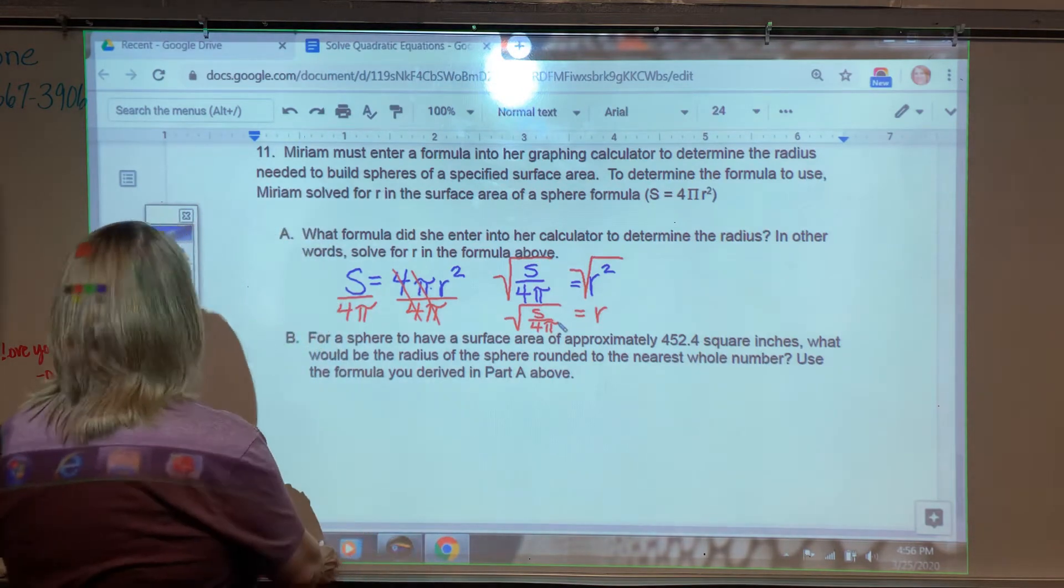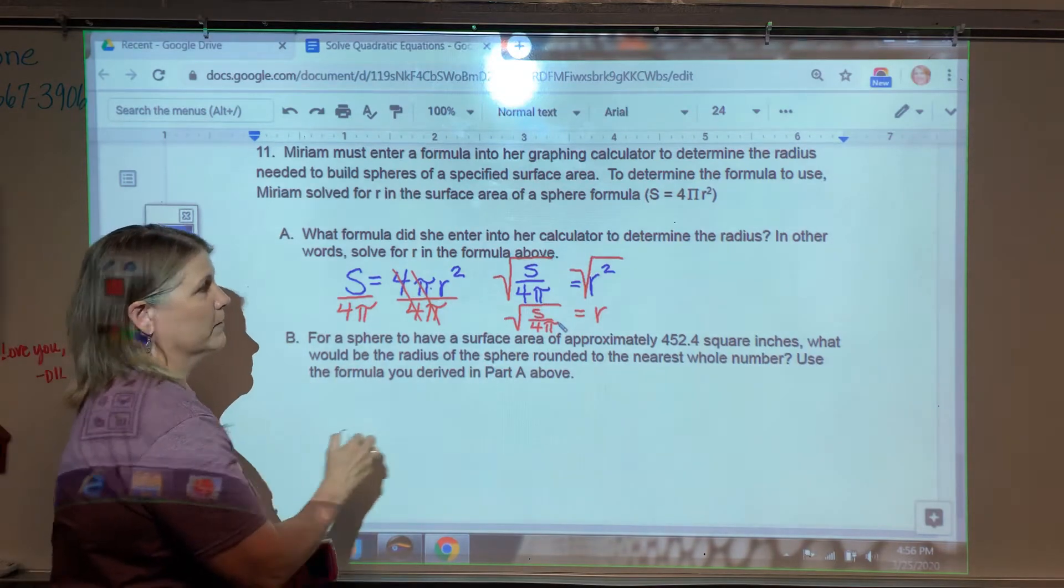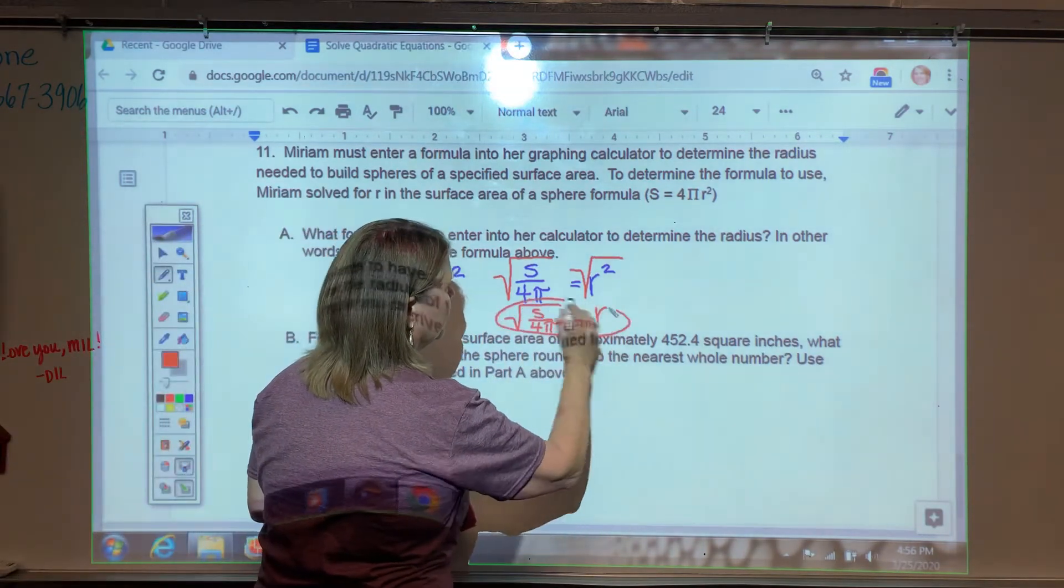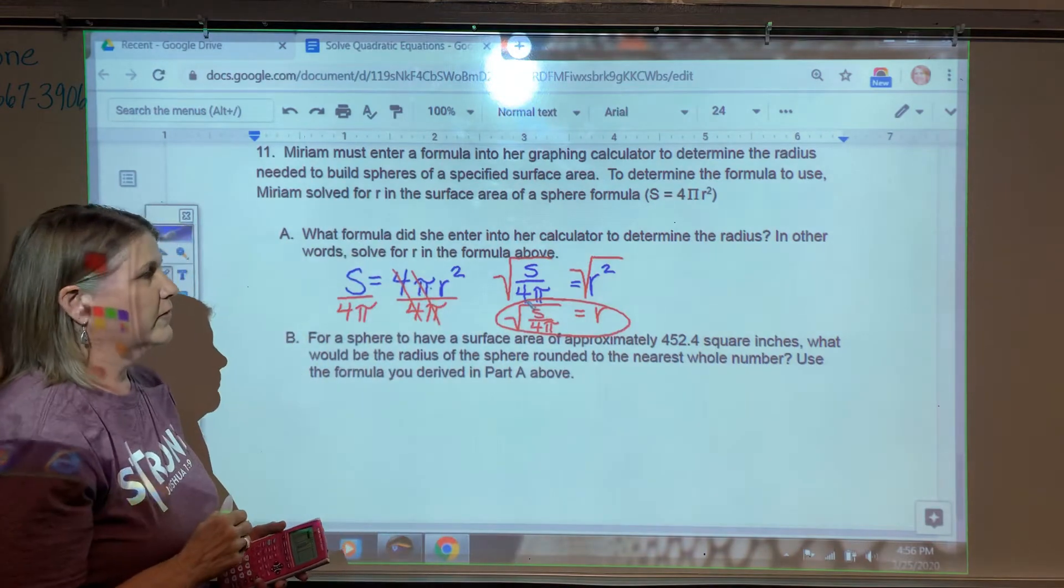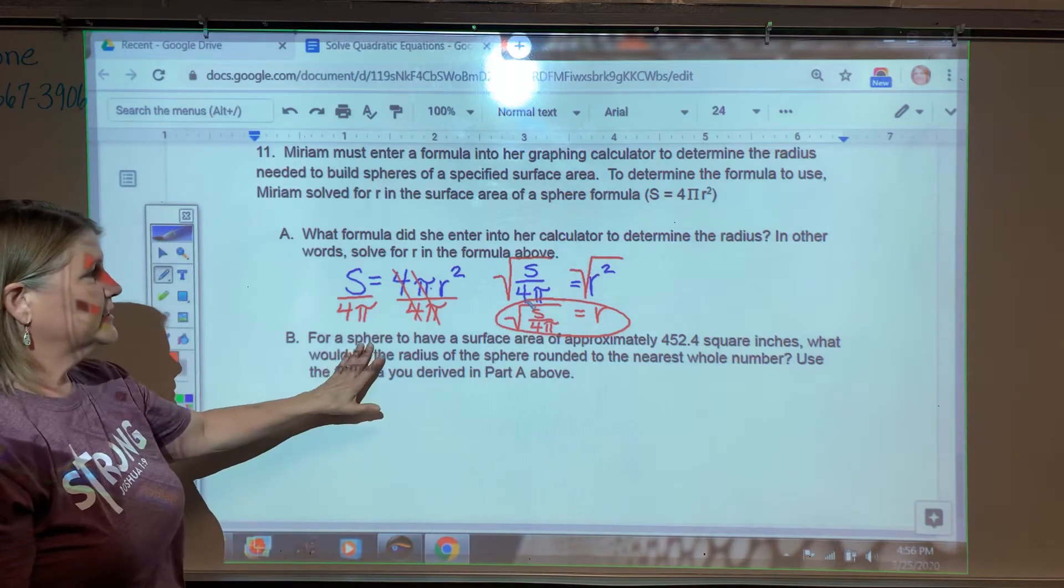So that's what you have to enter in your calculator. And now we're going to use that formula. Right here. The radius is the square root of S, the surface area, divided by 4 pi.